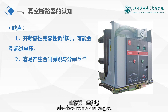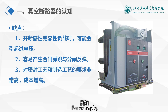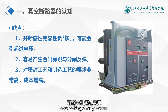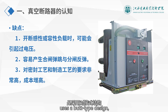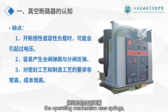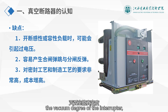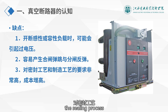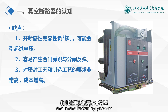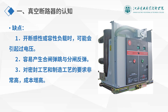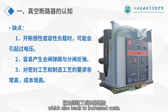However, vacuum circuit breakers also face some challenges. For example, when braking inductive or capacitive loads, overvoltage may occur. The contact structure uses a butt-type design, and the operating mechanism uses springs, which can easily cause closing bounces and opening rebounds. Moreover, to ensure the vacuum degree of the interrupter, the sealing process and manufacturing process requirements are very high, which also leads to increased costs.